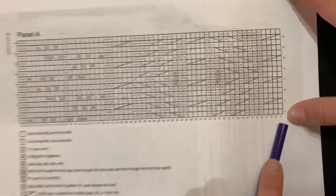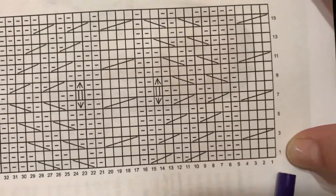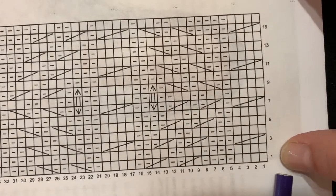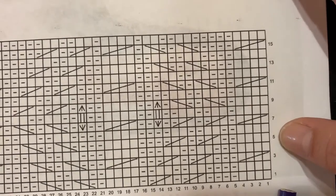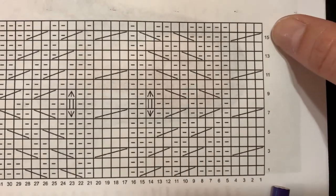Now also you'll see on this chart, on the right hand side of the chart, you have odd numbers: one, three, five, seven. These are the numbers for each row.